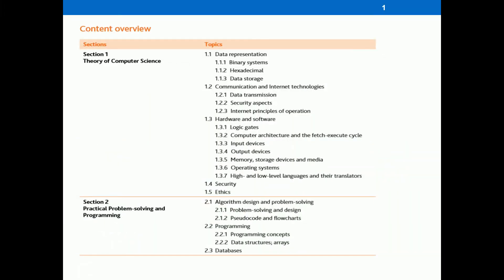Let's discuss the contents and overview of the subject. We have basically two papers: P1 and P2. P1 is the theory paper and P2 is the practical paper. In P1, the main contents include binary systems, hexadecimal notations, data storage, data transmission, security aspects, internet principles and operations, logic gates, computer architecture, fetch-execute cycle, input devices, output devices, memory and storage devices, operating systems, high-level language and translators. The most important chapter is security and ethics as well.